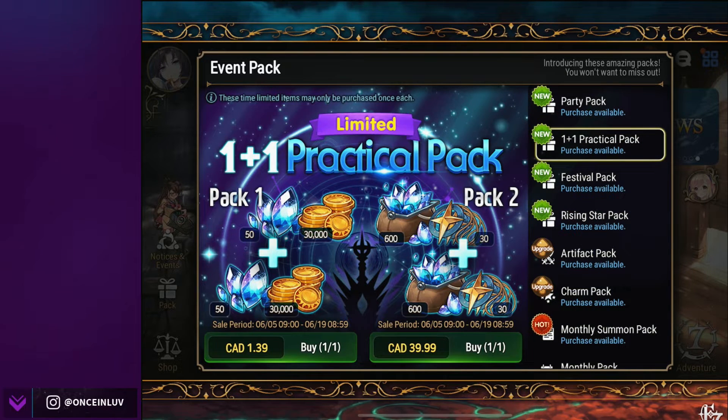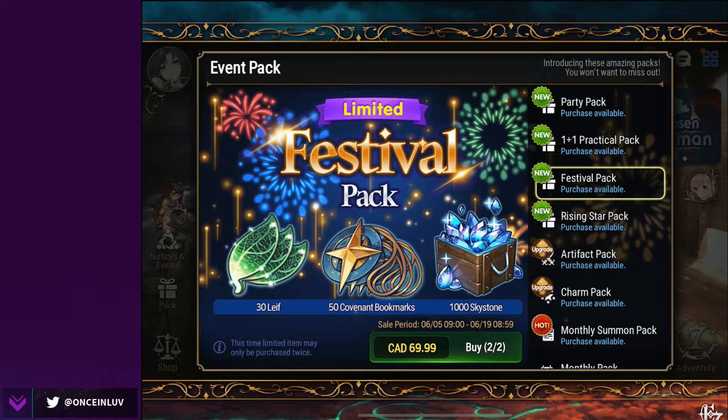The one plus one practical packs are 1200 skystones and 60 bookmarks for 30, and then you get 100 skystones and 60k gold for a dollar.